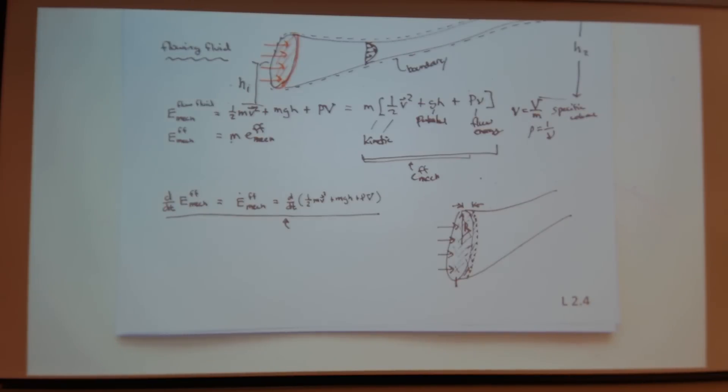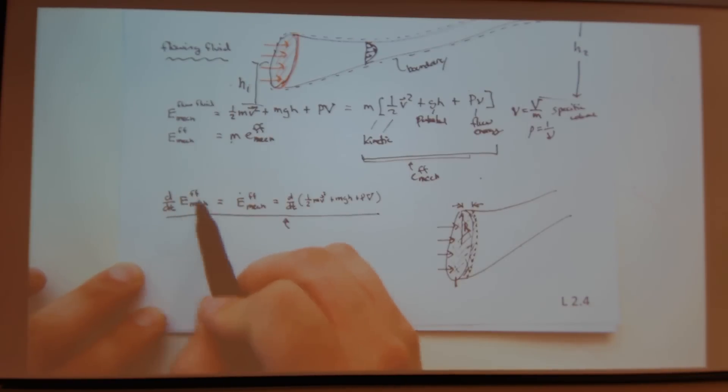So in an earlier example, we talked about the idea of the rate of heat transfer. And so we had the total heat, which was Q. And then we had the rate of heat transfer, which was Q dot. We can do the same type of thing. We have the total energy associated with fluid flow. We can have the rate of mechanical energy of fluid flow.